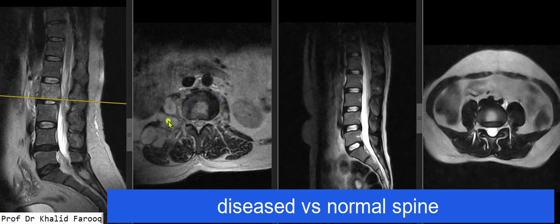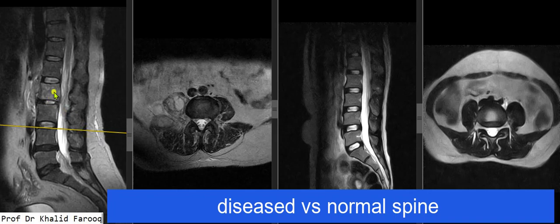Large multiseptated collections or abscesses are noted in the right psoas and quadratus lumborum muscles with involvement of the adjacent posterior paraspinal muscle. The infected vertebra still shows intact end plates, and the adjacent intervening discs are also normal. There is no involvement of contiguous vertebrae, and adjacent end plates and discs are spared.